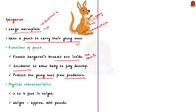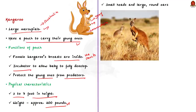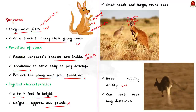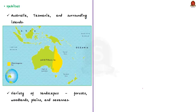Kangaroos are usually between 3 to 7 feet in height and can weigh up to approximately 200 pounds. They have relatively small heads with large and round ears. Due to their hopping ability, they can leap over long distances — some males can leap almost 30 feet in one leap. Kangaroos live in Australia, Tasmania and surrounding islands in a variety of habitats such as forests, woodlands, plains and savannas.